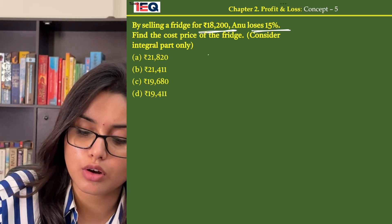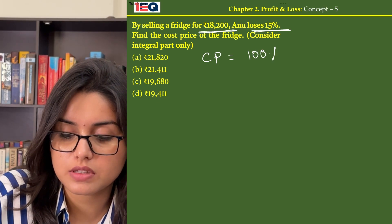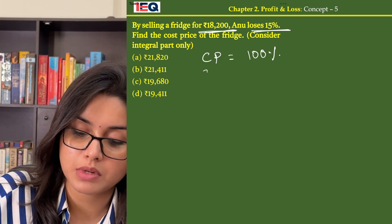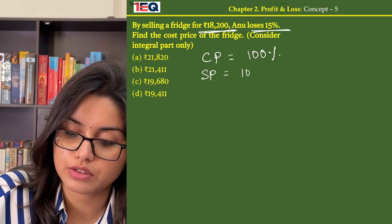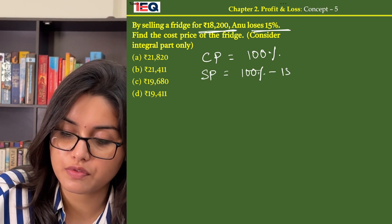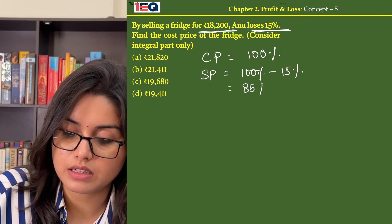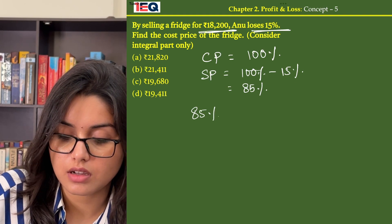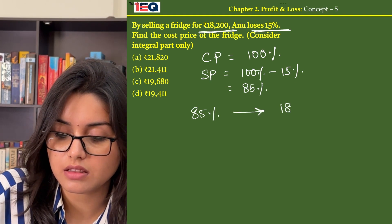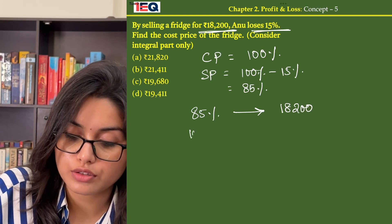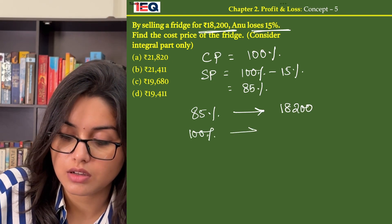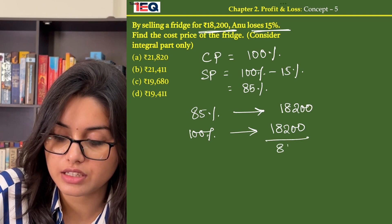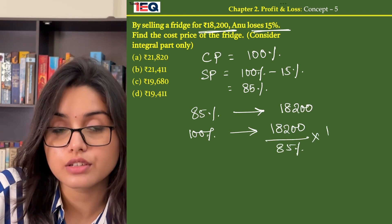Let's assume the cost price of the fridge is 100%. Considering the loss is 15%, the selling price becomes 100% minus 15%, which is 85%. So if 85% costs ₹18,200, then the cost of 100% will be 18,200 divided by 85, multiplied by 100.